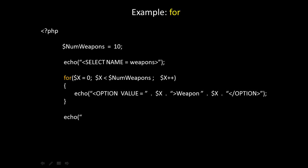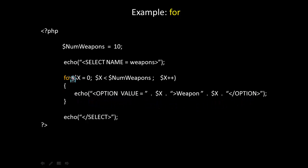Let's break down a basic for loop. In the example code, we have a variable numWeapons that starts out with an initial value of 10. We're going to create a selection structure in HTML, but write it out dynamically using PHP by placing the echo statement within a for loop that iterates 10 times. After the keyword for in the parentheses, we have the initialization — x starts out at zero — then the condition being tested, which is as long as x is less than numWeapons, which in the example is 10. And finally, the update, which is a postfix increment of x.